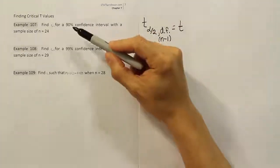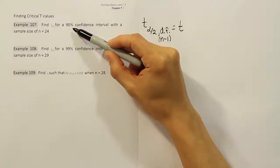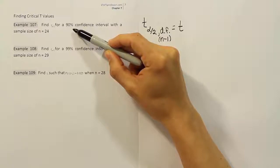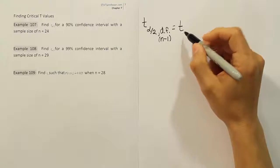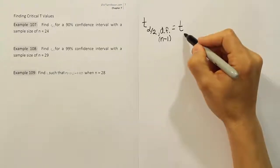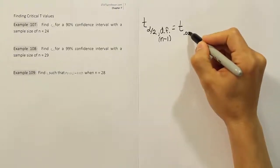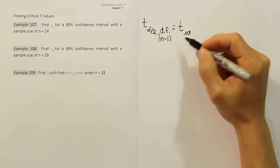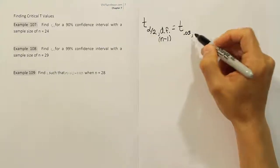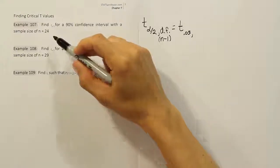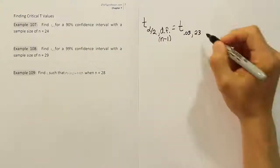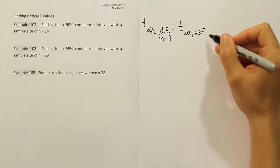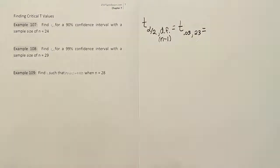What is alpha if the confidence level is 90%? The two must add to 100%, so alpha is 10%. Alpha divided by 2 is 5%, written as 0.05. That's the alpha divided by 2 value. The degrees of freedom: sample size is 24, so 24 minus 1 gives us 23. That's what we need to look up on the t-table.